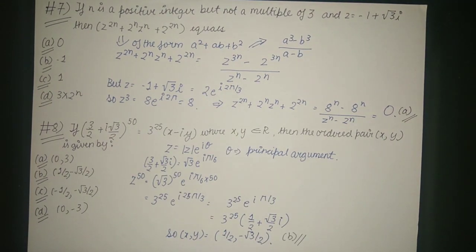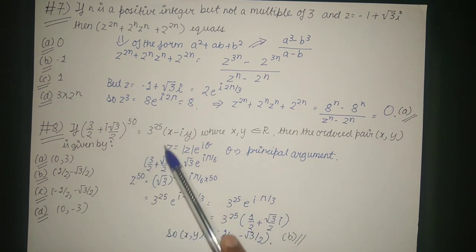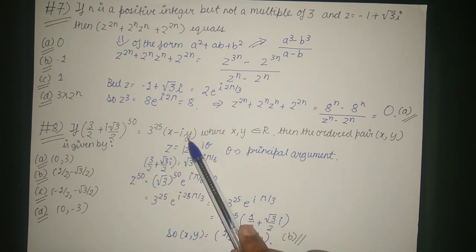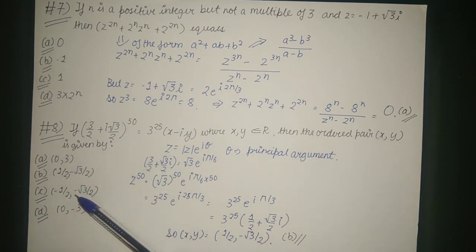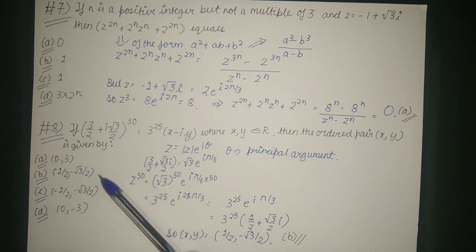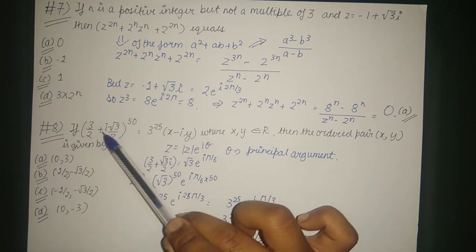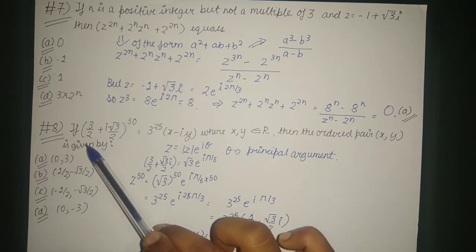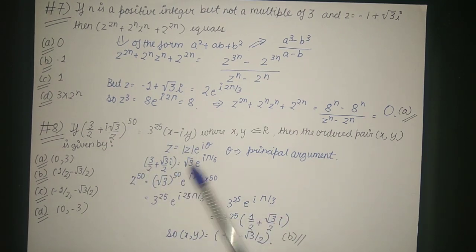The last question: if (3/2 + i√3/2)^50 = 3^25·(x - iy), where x and y are real, find the ordered pair (x, y). The four options are: (0, 3), (1/2, -√3/2), (-1/2, -√3/2), and (0, -3). We convert the complex number to polar form z = |z|·e^(iθ).